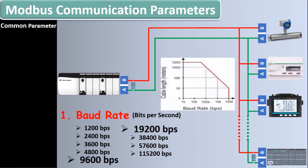Maximum cable length for Modbus communication depends on the baud rate — the higher the baud rate, the shorter the maximum cable length for smooth data transmission. For example, at 19600 bits per second the cable length can be up to 1200 meters. At 100k bits per second, cable length can be up to 1000 meters. At 10 Mb per second, cable length reduces to only 10 meters. You can increase cable length by adding a Modbus repeater in your Modbus network.